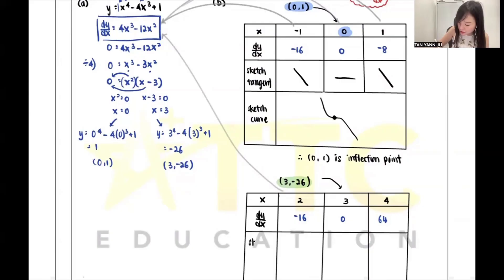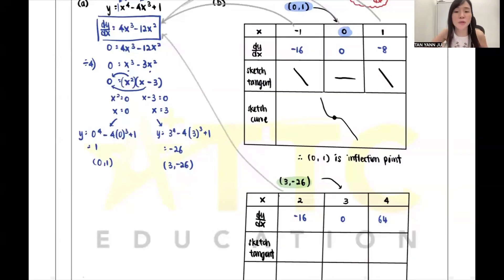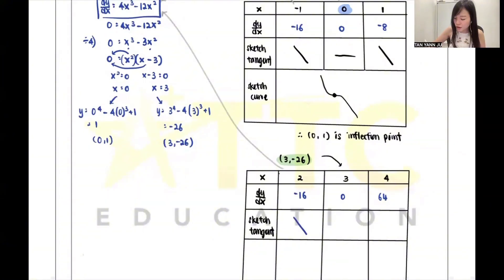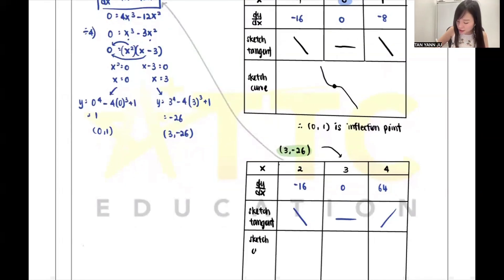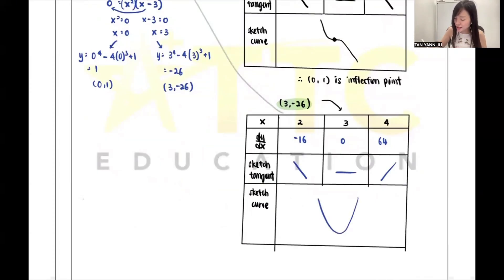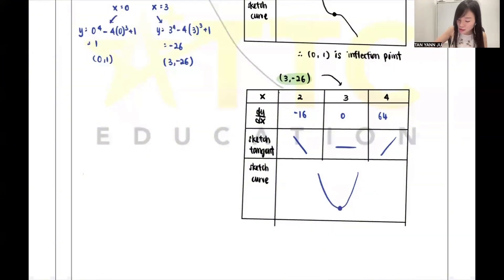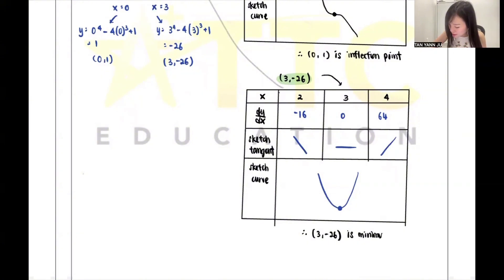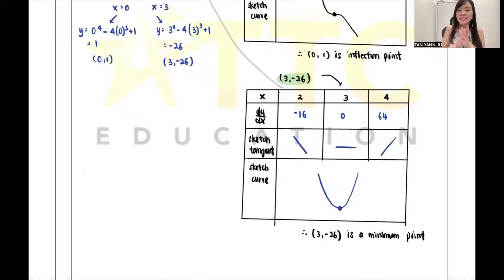Once I have all the dy/dx values, I sketch the tangents. Negative goes down, zero is horizontal, positive goes up. For the curve sketch: down, horizontal, up - you are a happy person. If it goes down then up, the point is at the bottom - that means it is a minimum point. So (3, -26) is a minimum point. Part (b) is done.